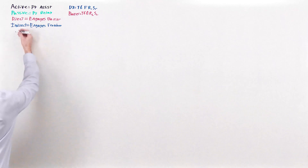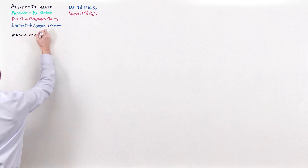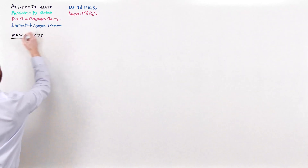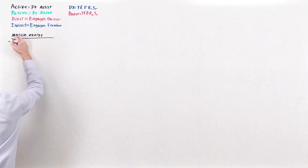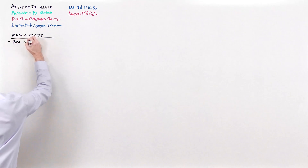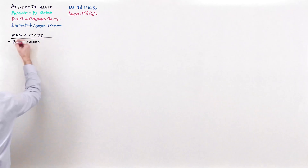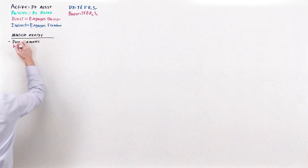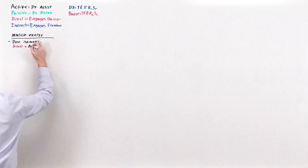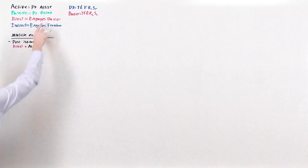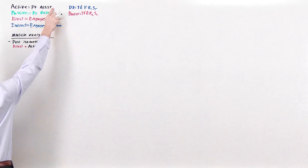To start off with, we'll do muscle energy. Muscle energy comes in two flavors. The first one is post-isometric relaxation. This treatment technique is direct and active — direct because you are engaging the barrier, and active because you are asking the patient to do something during the treatment.